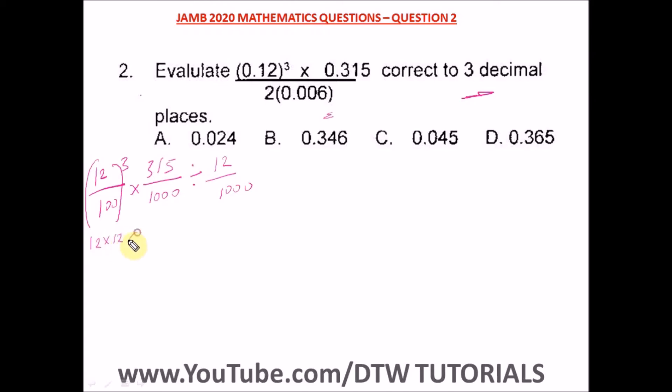We have 12 times 12 times 12 all over 100 times 100 times 100, times 315 over 1000. So we have to turn this to multiplication - remember this flips over - so we have 1000 over 12.